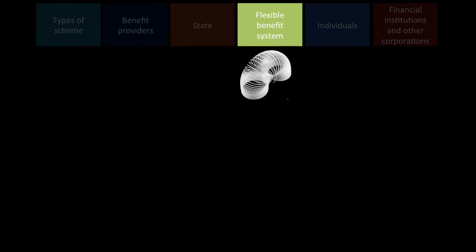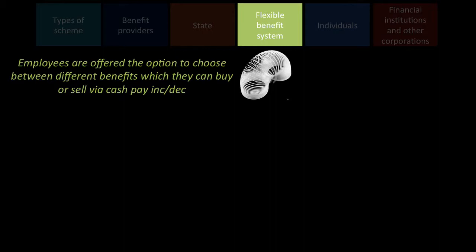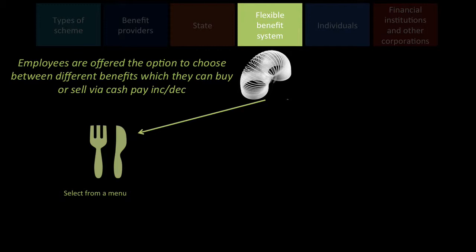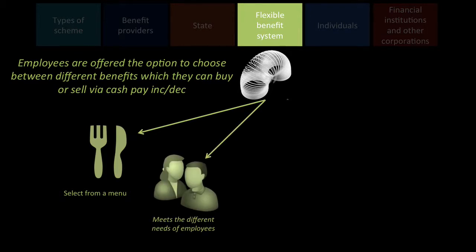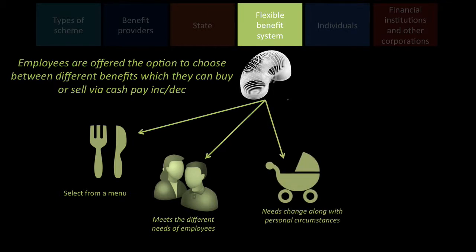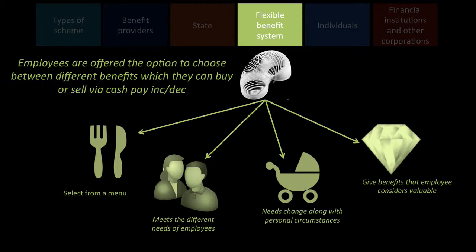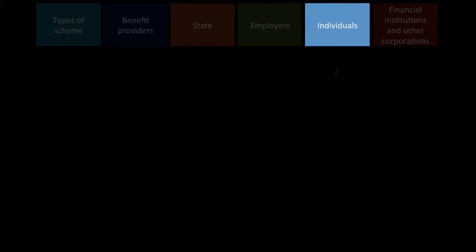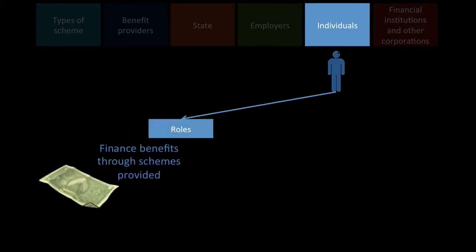Flexible benefit schemes: employees are offered the option to choose between different benefits which they can buy or sell by cash base — so you can have more holiday and less salary, or fewer days off but a higher salary, almost like selecting benefits from a menu. This meets the needs of different employees since your needs can change — for example if you get pregnant you have a dependent — and it gives benefits that the employee actually considers valuable.